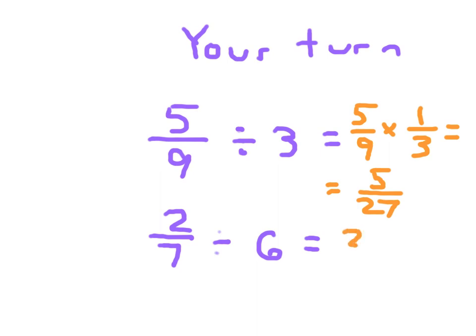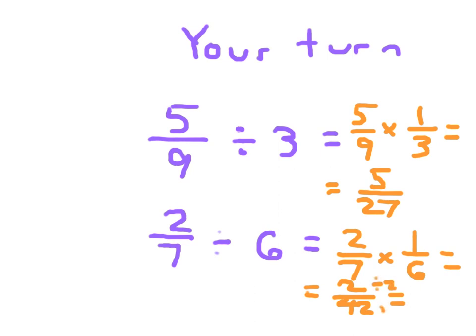2 sevenths divided by 6. We'll write 2 sevenths times 1 sixth. 2 times 1 is 2, and 7 times 6 is 42. And that you need to simplify — dividing the numerator and denominator both by 2. 2 divided by 2 is 1, and 42 divided by 2 is 21. So 2 sevenths divided by 6 is 1 twenty-first.